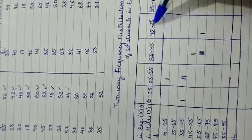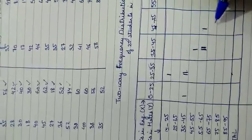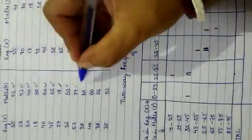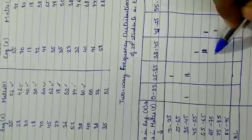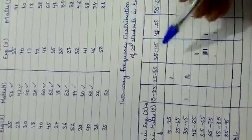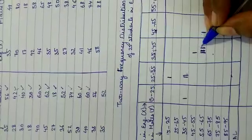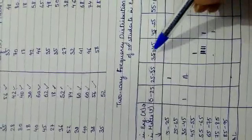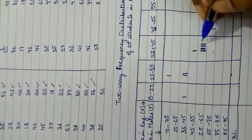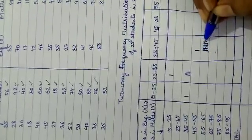Next is X=38 and Y=60: X=38 is in 35–45 and Y=60 is in 55–65. Then X=40 and Y=60: same intervals, another tally mark there. Then X=38 and Y=56: X=38 is in 35–45 and Y=56 is in 55–65. That cell now has 5 tally marks.